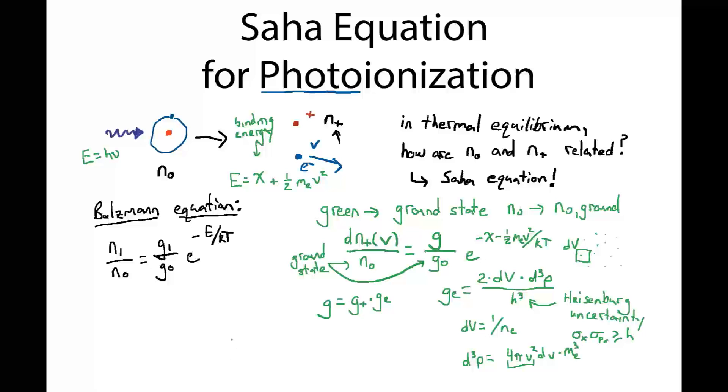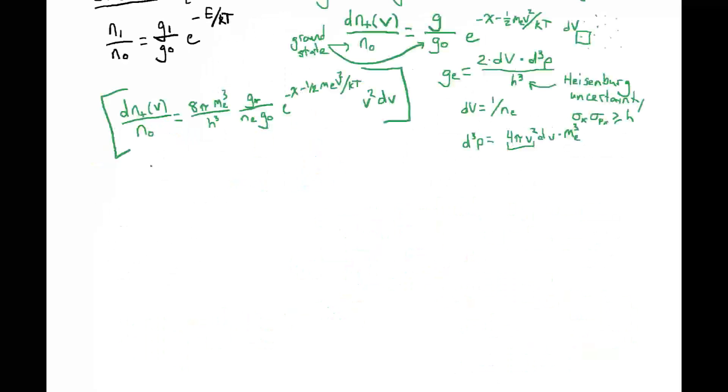So rewriting our Boltzmann equation for the ground state, we end up with the differential number of ions at a given velocity v relative to the number of atoms in the ground state is equal to 8π me cubed over h cubed times g+ over ne g0, e to the minus chi minus one-half me v squared over kT times v squared dv. So this is where we are so far, going from a ground state to a state with an electron velocity of v.